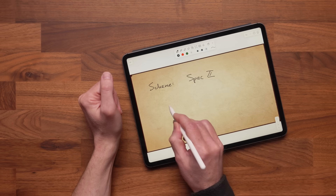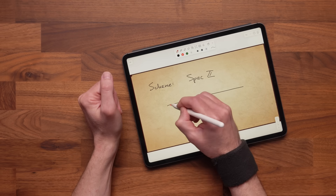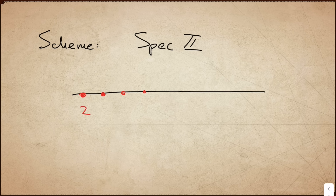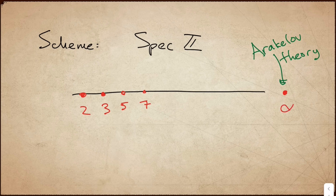Sometimes you will see the scheme Spec Z, which is in some ways like a line. All prime numbers are points, like we want, and you can use something called Arakelov theory to also get an extra point, or the infinite prime. The problem with using schemes in the global case is that there is no way to make sense of all L-functions in terms of shallow geometry.